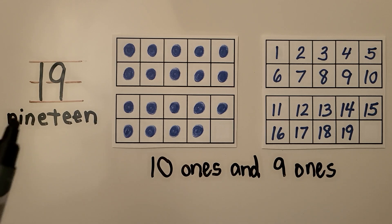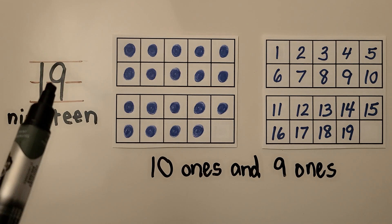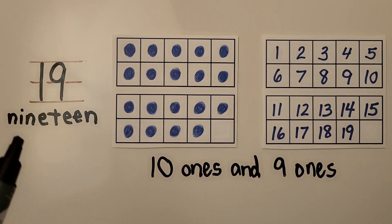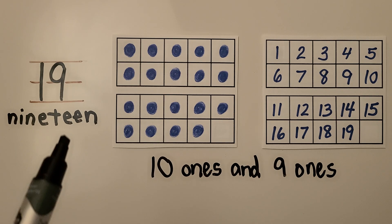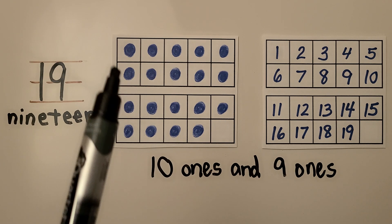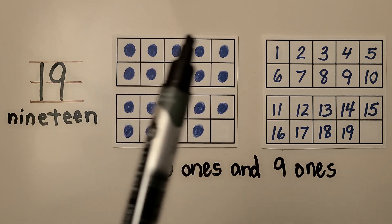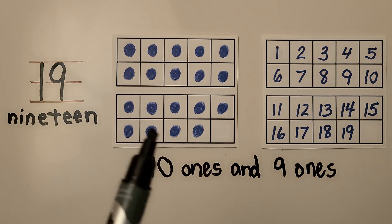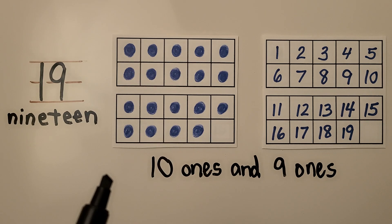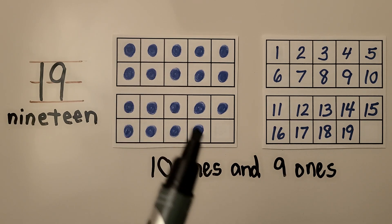Here we have the number 19. It's a 1 next to a 9 together. Here is the word 19, nineteen. We can show 19 as a full 10 frame with 10 and 9 more. 19 is 10 ones and 9 ones.